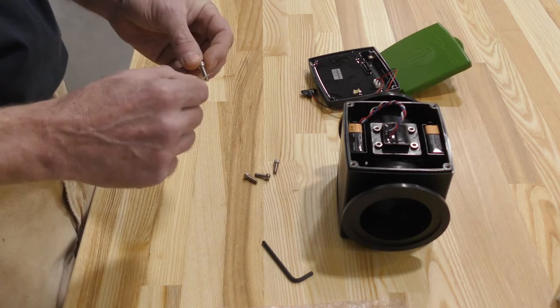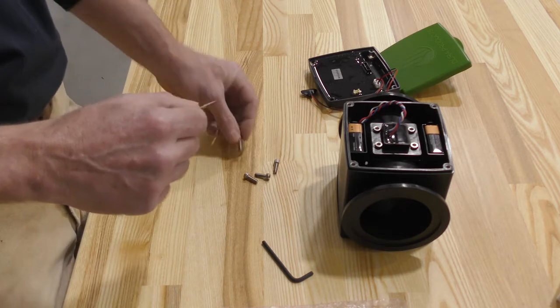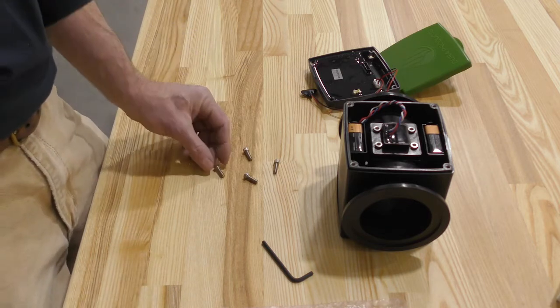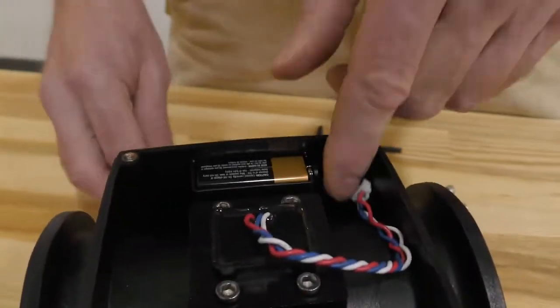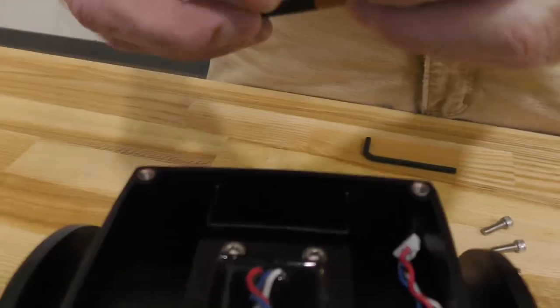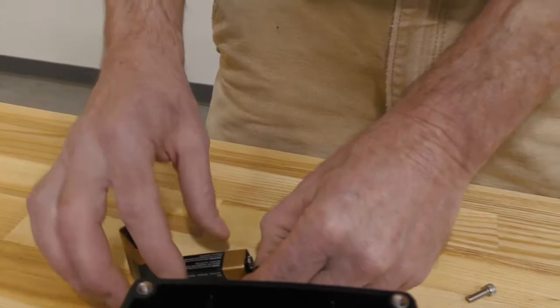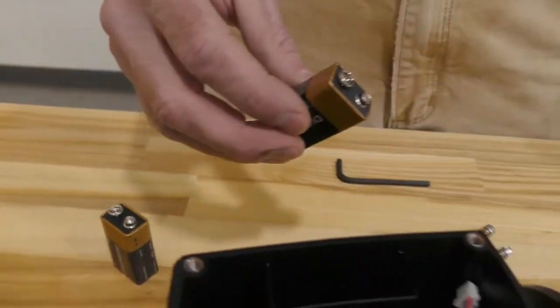To begin, put a little anti-seize on each 1032 bolt. Remove the batteries out of the battery holders, then connect the 9-volt batteries to the battery connectors attached to the meter face plate.